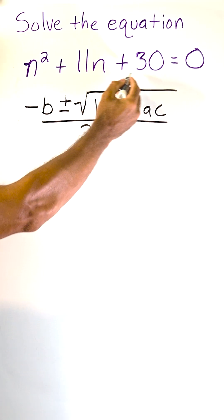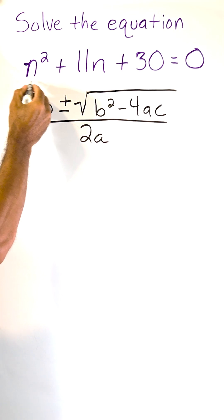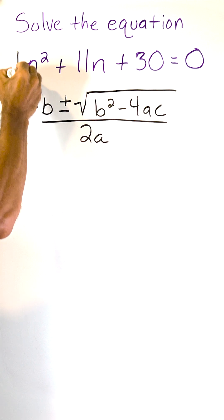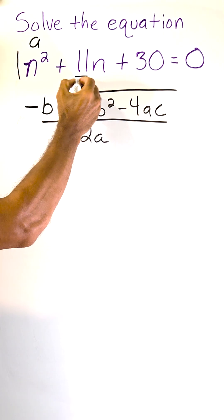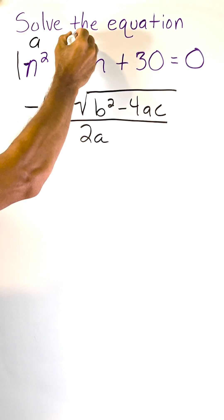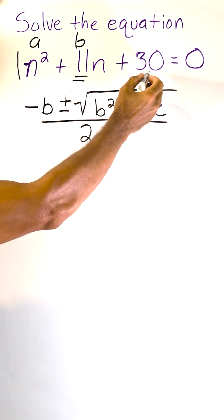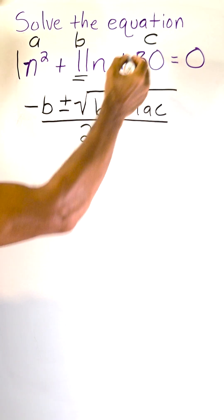So when your equation is written like this in standard form, the coefficient of the first term, which in this case is 1, is going to be your A term. The coefficient of the second term, which in this case is positive 11, is your B term. And this constant right here is going to be our C term.